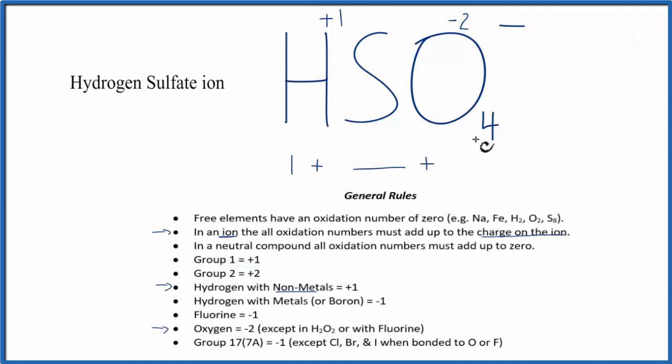So if we can figure out what this number is, we'll know the oxidation number for sulfur. One plus six - that would give us seven - plus minus eight, that would give us minus one. So the oxidation number on the sulfur is going to be plus six.